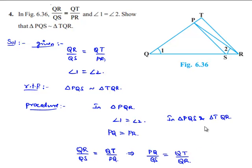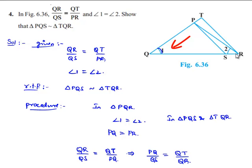Now if we consider triangle PQS and triangle QTR, PQ by QS is equal to QT by QR. So here two of the corresponding sides are in proportion, and also angle SQP is equal to angle RQT, which is the included angle common to both triangles.